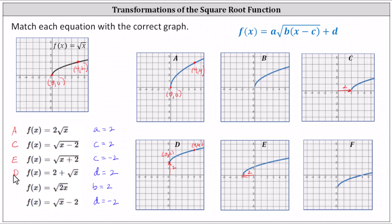Let's jump down to the last function where d is negative two, which indicates a vertical shift down two units. Notice graph F is the basic square root function shifted down two units.